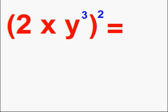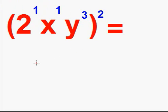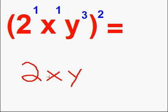Look out for coefficients, which is the number in front of the variables. Its exponent is 1. Any time you see a number or a variable without an exponent, just always assume it's 1. Do not multiply the exponent by the coefficient — always multiply exponents by exponents. So here the same rules apply. We're going to keep all of the same bases: we have a 2, an x, and a y, and the exponents will change. 1 times 2 is 2, 1 times 2 again is 2, and 3 times 2 is 6.